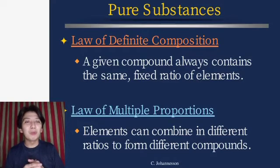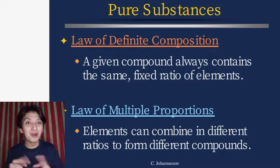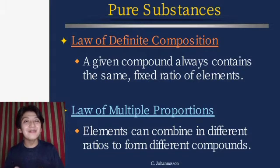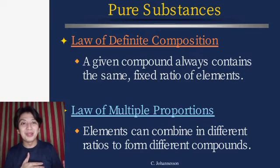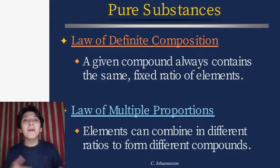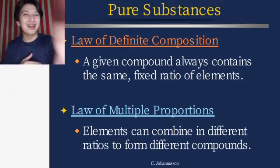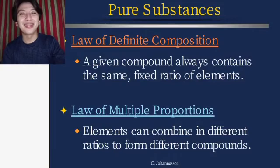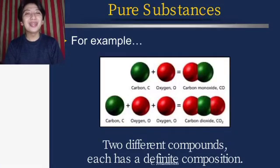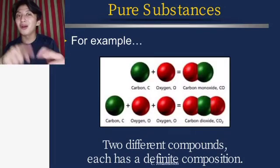The law of multiple proportions states that elements can combine in different ratios to form different compounds — like carbon monoxide and carbon dioxide, which use the same elements (carbon and oxygen) but in different ratios, producing different compounds. The law of conservation of matter states that matter cannot be created nor destroyed — it can only be transferred or transformed, like energy.